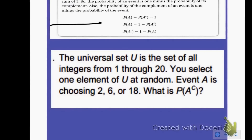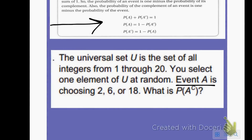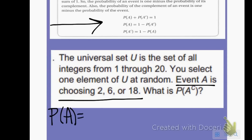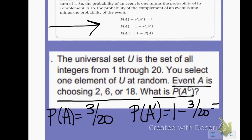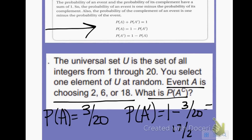The universal set U is the set of all integers 1 through 20. You select one element at random. Event A is choosing 2, 6, or 18. So the probability of A is 3 out of 20. The probability of the complement of A, written as A prime, equals 1 minus 3/20, which equals 17 over 20.